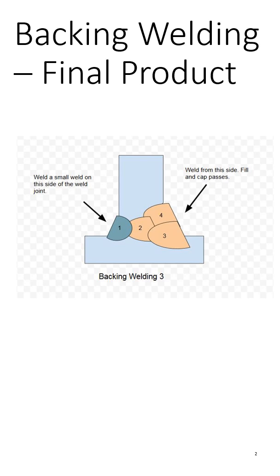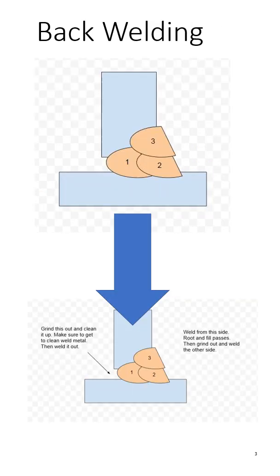With a back weld, when we're back welding, we put in the weld from the right side first, and then we come in from the left side and clean up that root pass area. We come in from the left side with a grinder or however we're going to clean that up and get it all cleaned up.